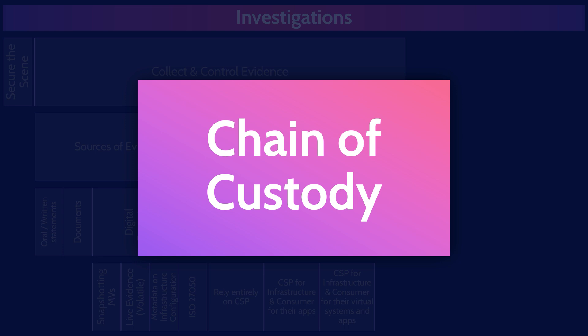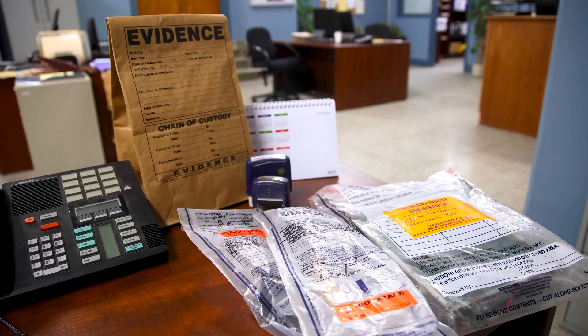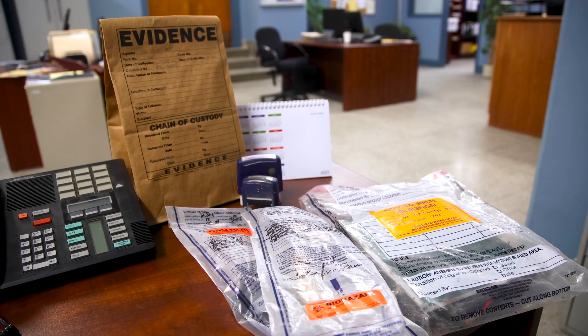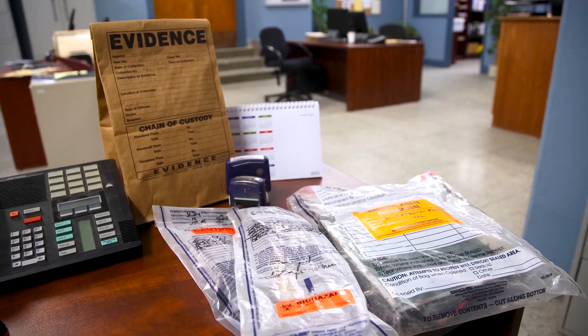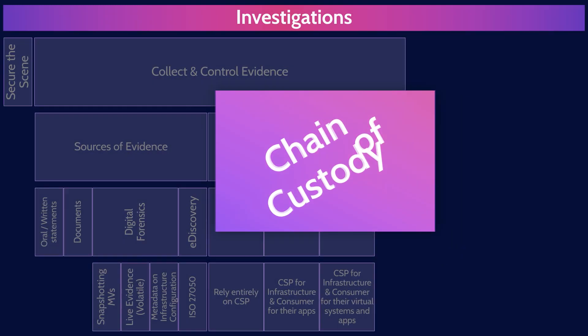The chain of custody — you should associate the chain of custody with one word: control. The chain of custody is the process of documenting the complete journey of evidence during the life of the case, demonstrating control of the evidence from the moment it was collected to potentially years later when it's presented in a court of law. And thus, the evidence has integrity.